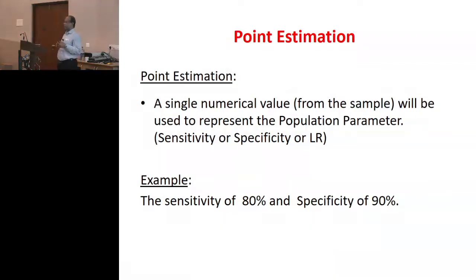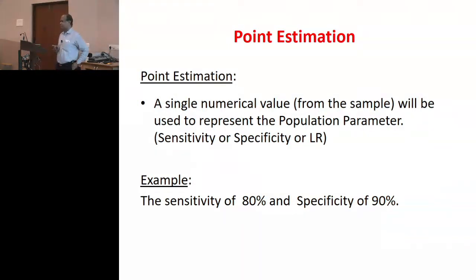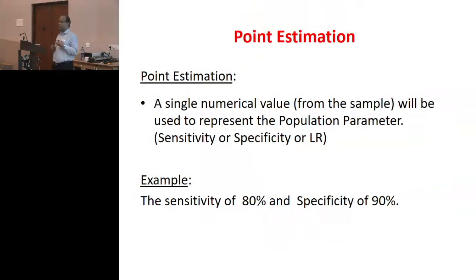This has to come from you — how good your sensitivity and specificity should be. You should not phrase your question saying 'let me have 60% sensitivity and specificity.' Sometimes committee members may not like that kind of phrasing. So you say, 'I would like to have minimum 80% sensitivity and specificity.'